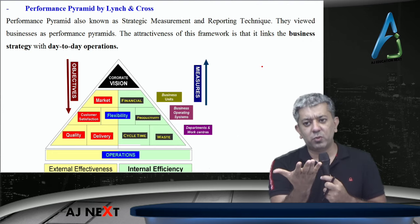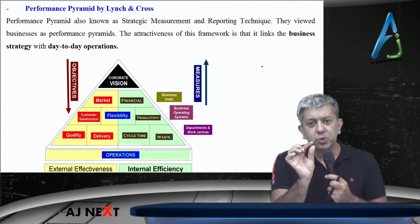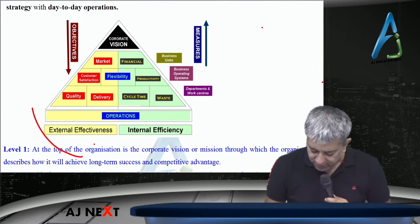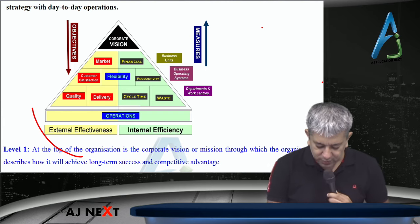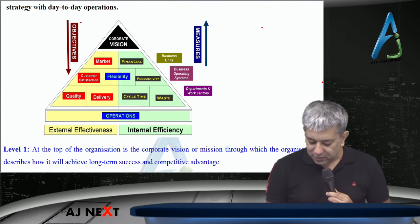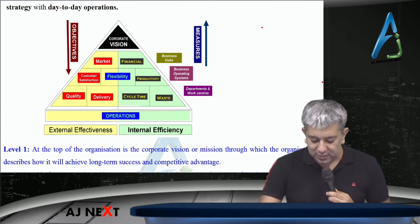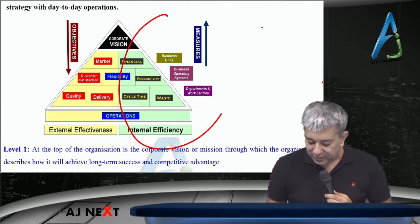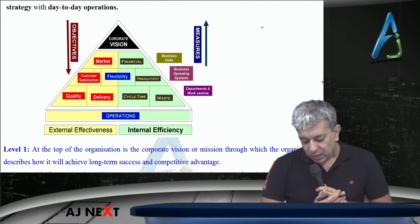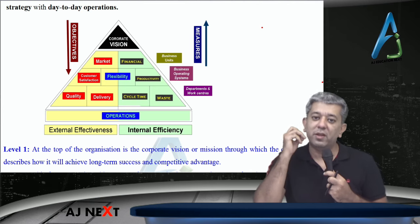They have some vision for the company, which we call corporate vision. They have some aims. Now these things are usually non-financial in nature. So the left-hand side of this pyramid is basically the non-financial part — your objectives, what you have to achieve. You can also call these particular things as critical success factors. Whereas on the right-hand side, these are the ways and means to achieve those objectives.